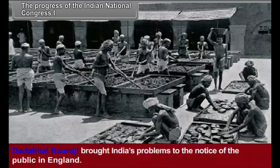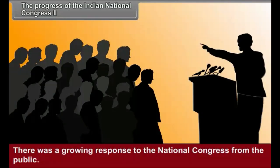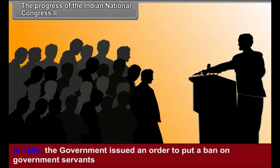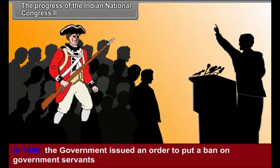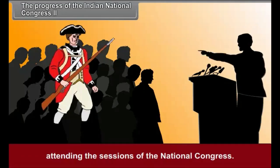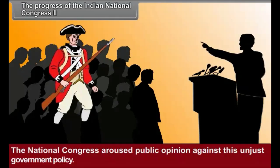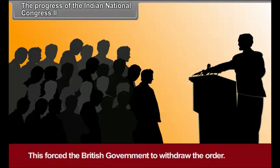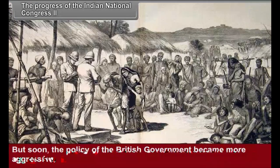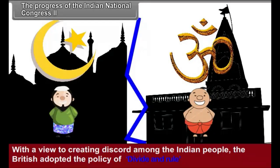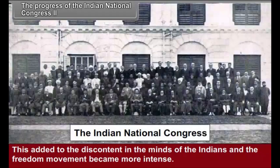Dadabhai Naoroji brought India's problems to the notice of the public in England. There was a growing response to the National Congress from the public. In 1890, the government issued an order to ban government servants from attending the sessions of the National Congress. The National Congress aroused public opinion against this unjust policy, which forced the British government to withdraw the order. But soon the policy of the British government became more aggressive. With a view to creating discord among the Indian people, the British adopted the policy of divide and rule, which added to the discontent in the minds of the Indians and the freedom movement became more intense.